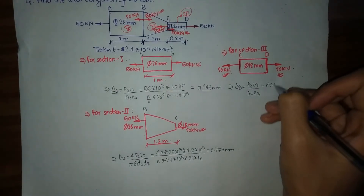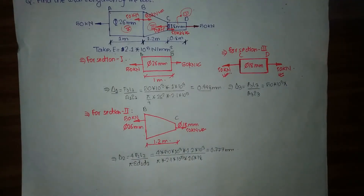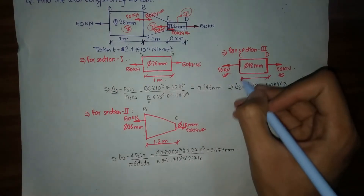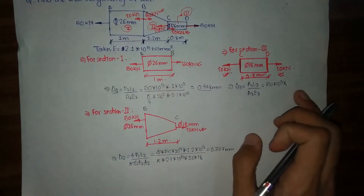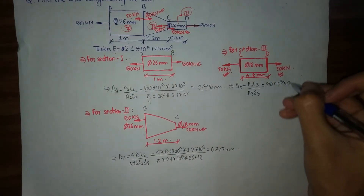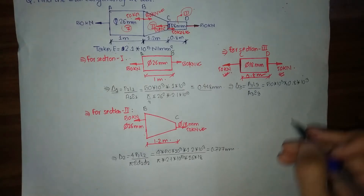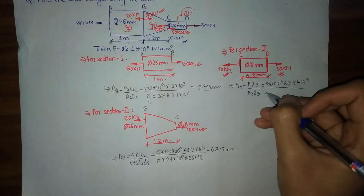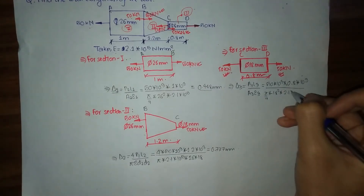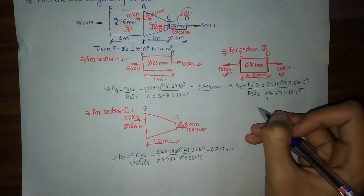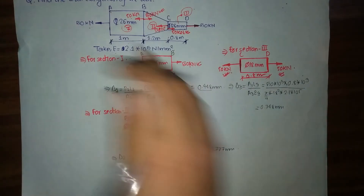We have P₃ = 50×10³ N, L₃ = 0.8 meter = 0.8×10³ mm. The area A₃ = (π/4)×18² mm², and Young's modulus E = 2.1×10⁵ N/mm². Solving this gives δ₃ = 0.748 mm.